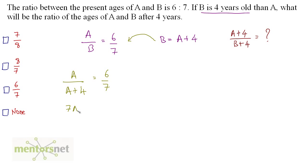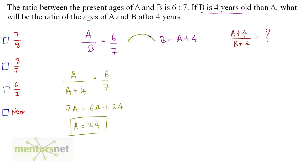Therefore 7A is equal to 6 times A plus 4, which gives us 6A plus 24. Now 7A minus 6A gives A is equal to 24. So A's value is 24. Now B's value is equal to A plus 4 and A is 24, so 24 plus 4. Therefore B is equal to 28.